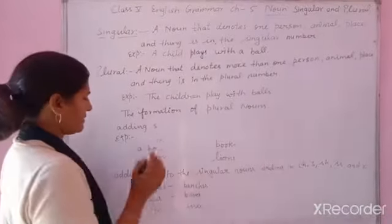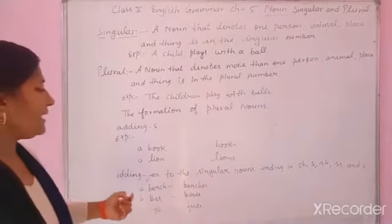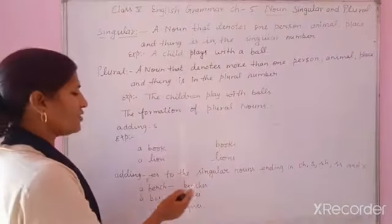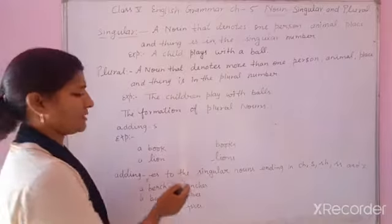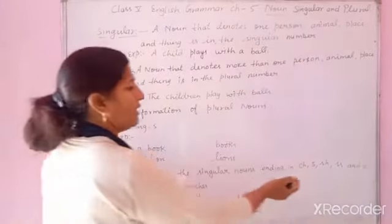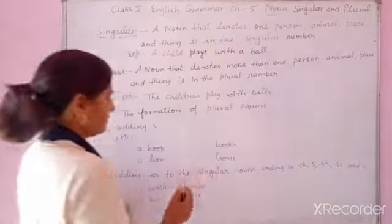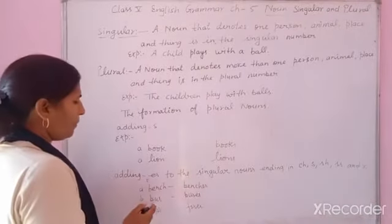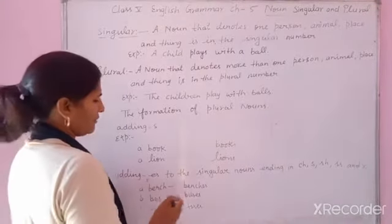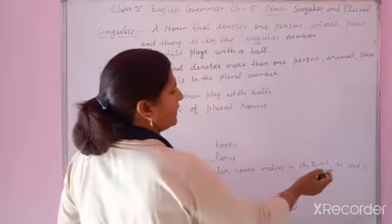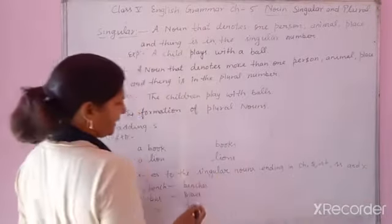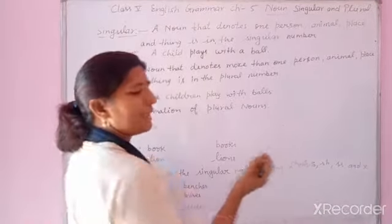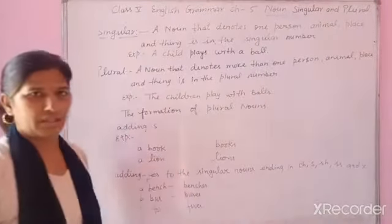Now, adding ES: 'bench' becomes 'benches' — ES use karke, with CH ending. 'Bus' becomes 'buses' — ES use karke. 'Fox' becomes 'foxes' — ES use karke.